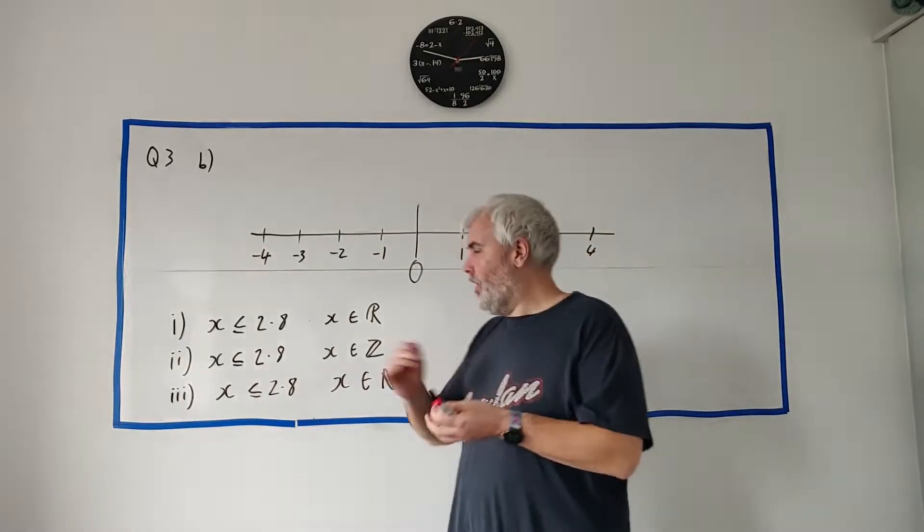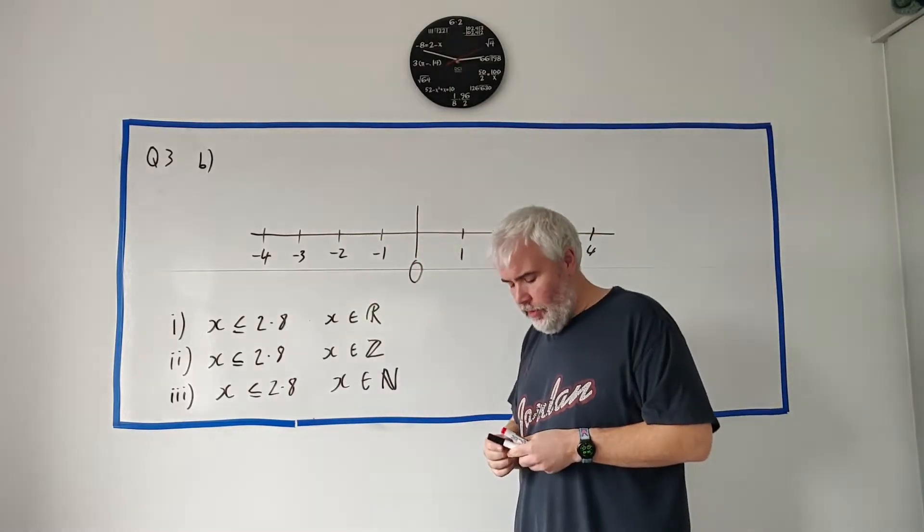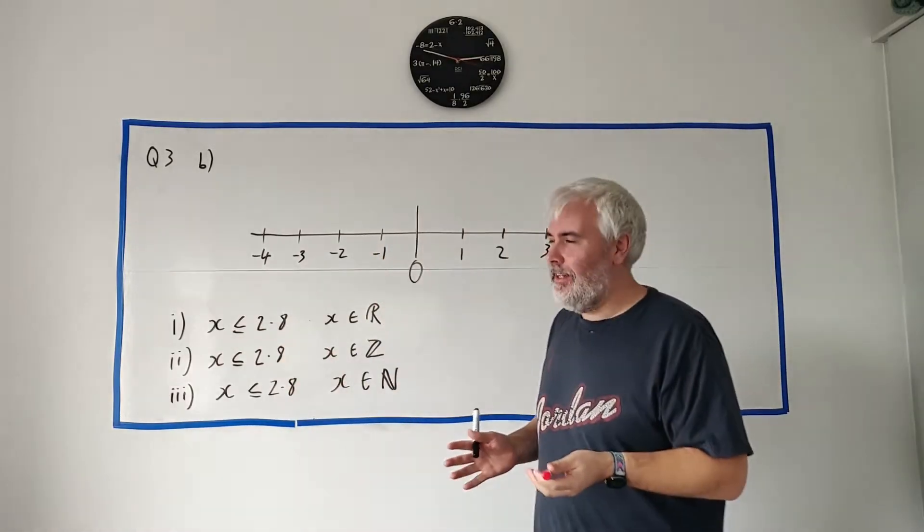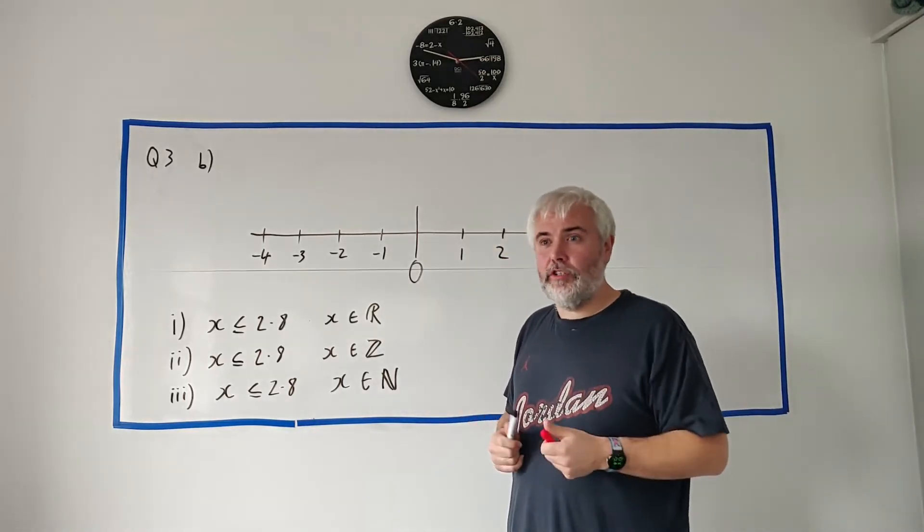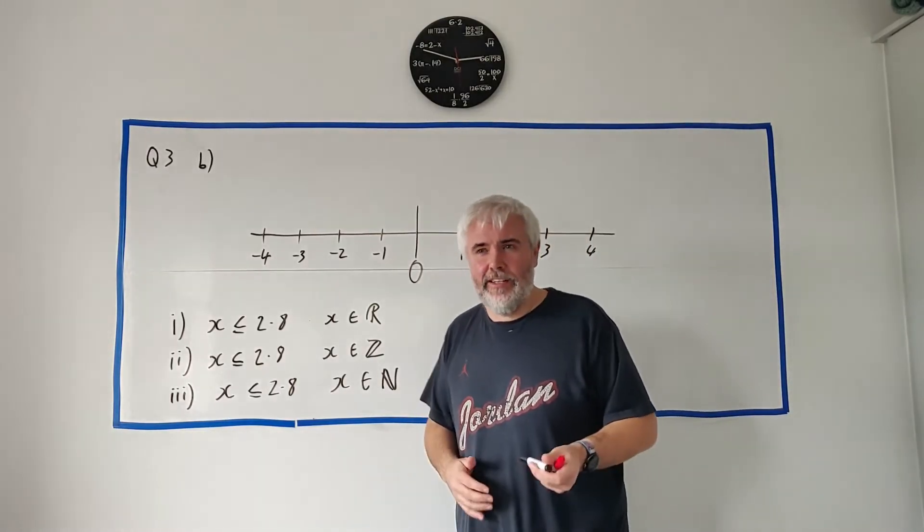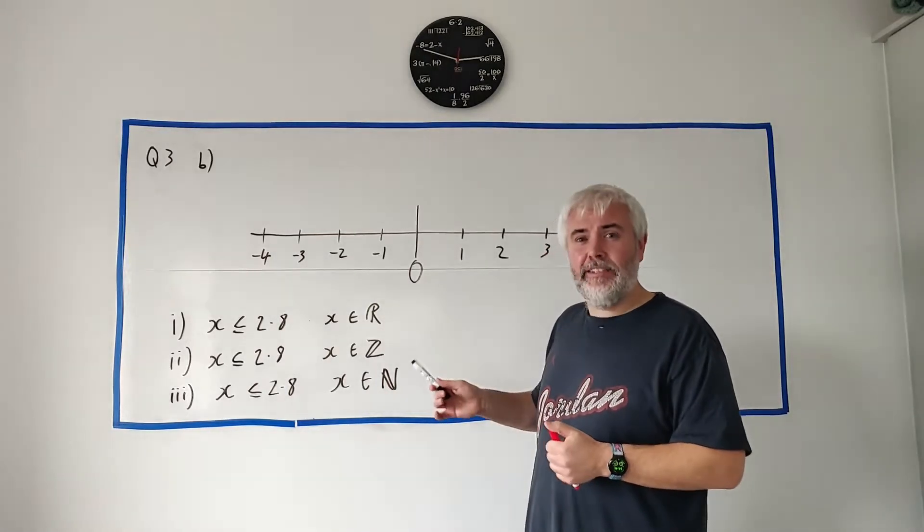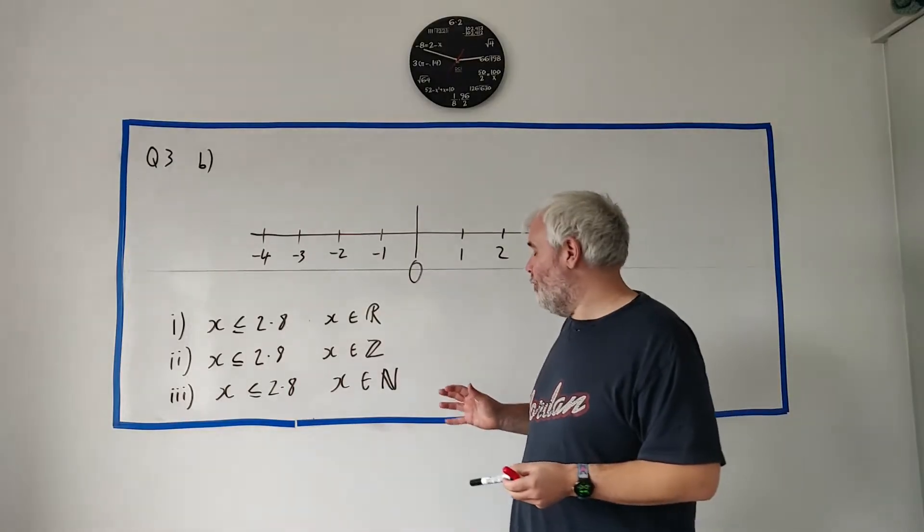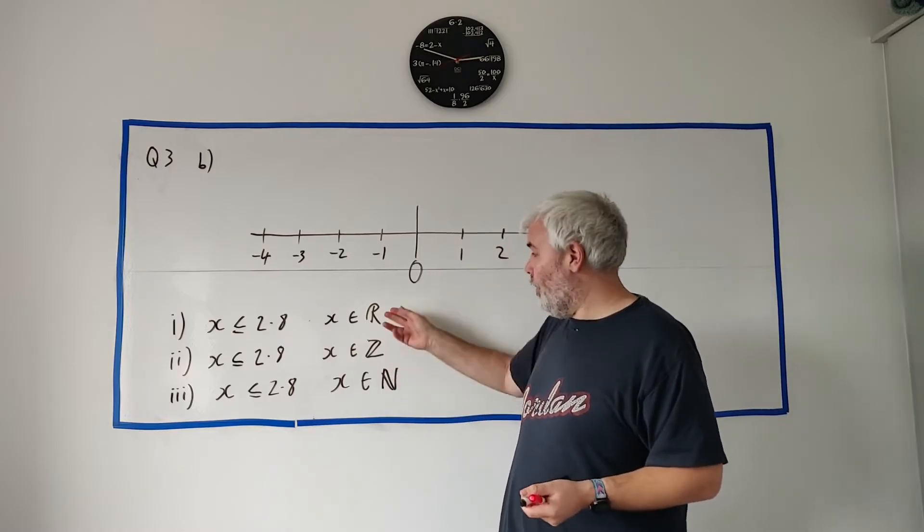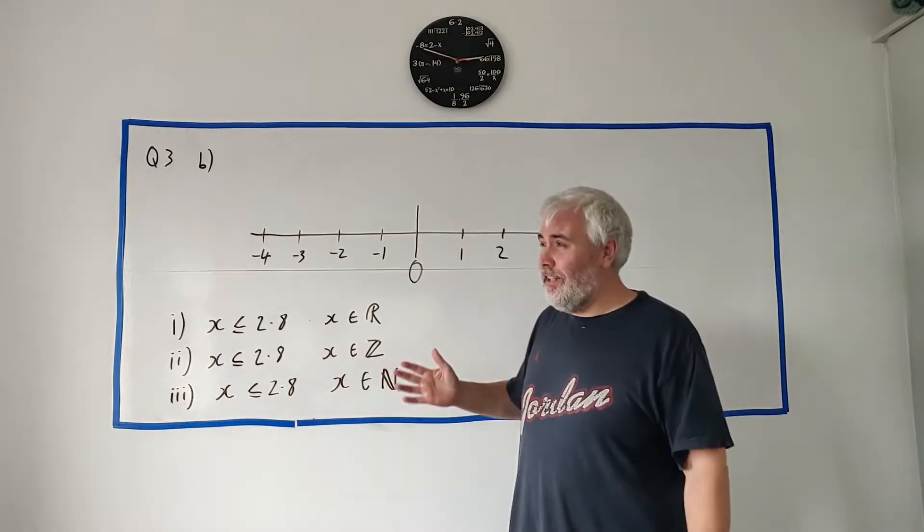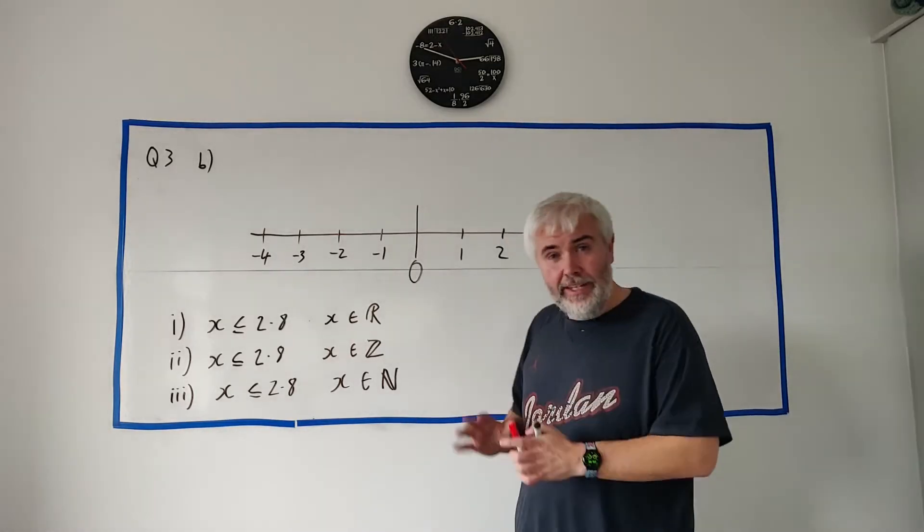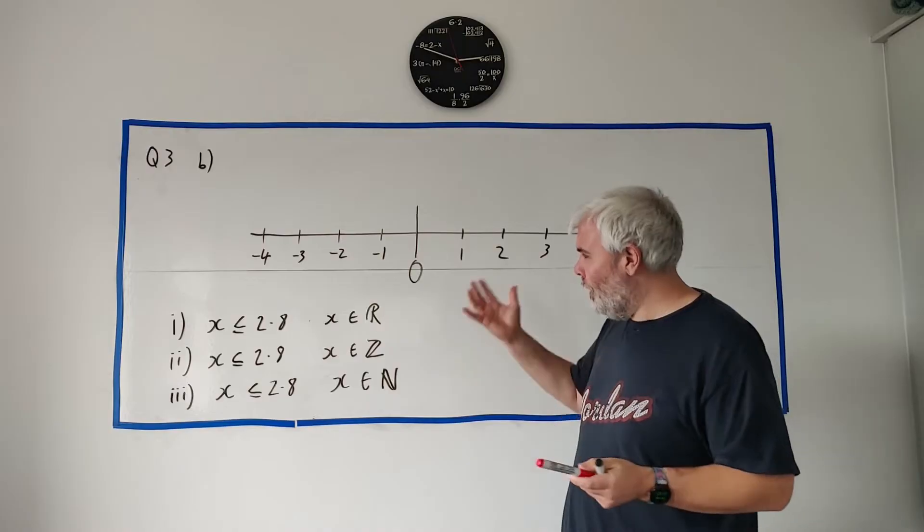For part b they give us three different parts one two and three and they have a number line for each of them. This is on your page already so you have to fill in this number set. It's actually a really short question if you know what you're doing. If you don't it's going to be nearly impossible but they do like to ask a question something like this. There's lots of room in the exam for them to ask different types of things. So you do have to have a bit of an understanding if you want to get a hundred percent of R, Z and N. The real numbers, the integers and the natural numbers.